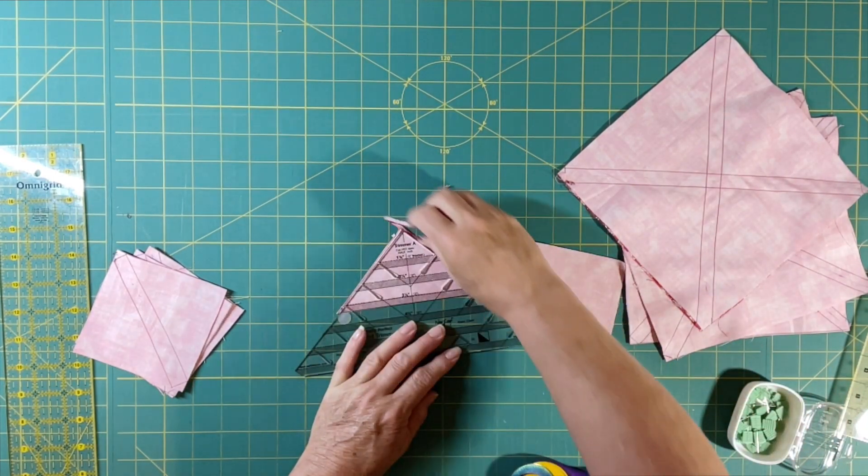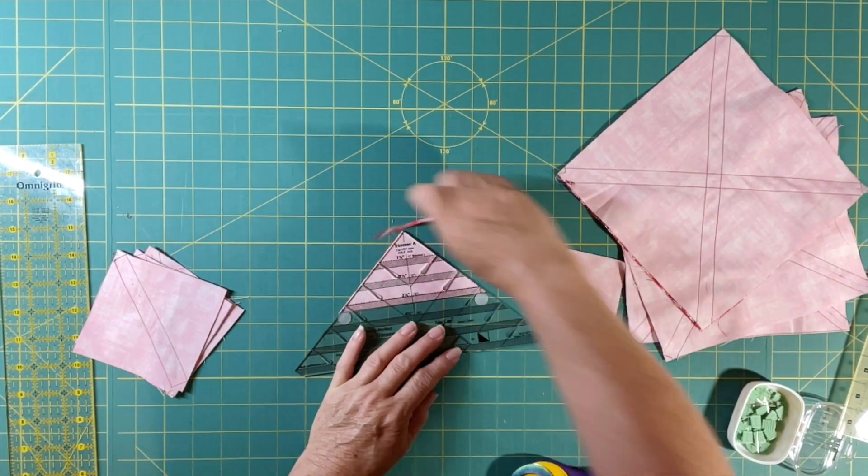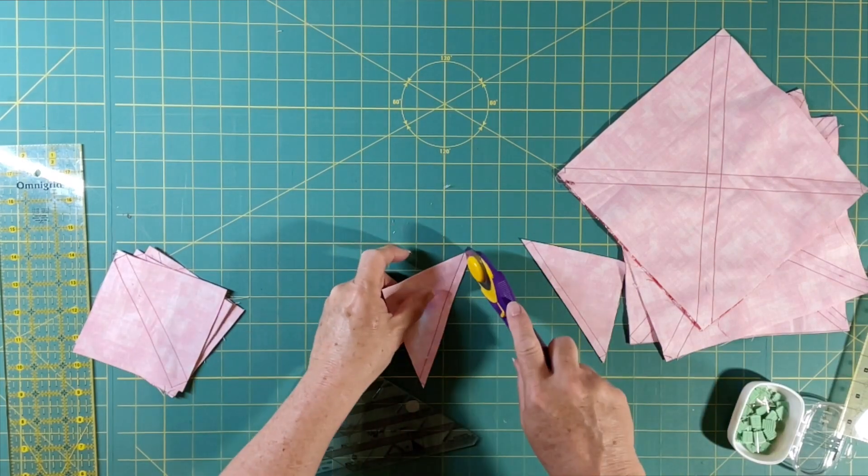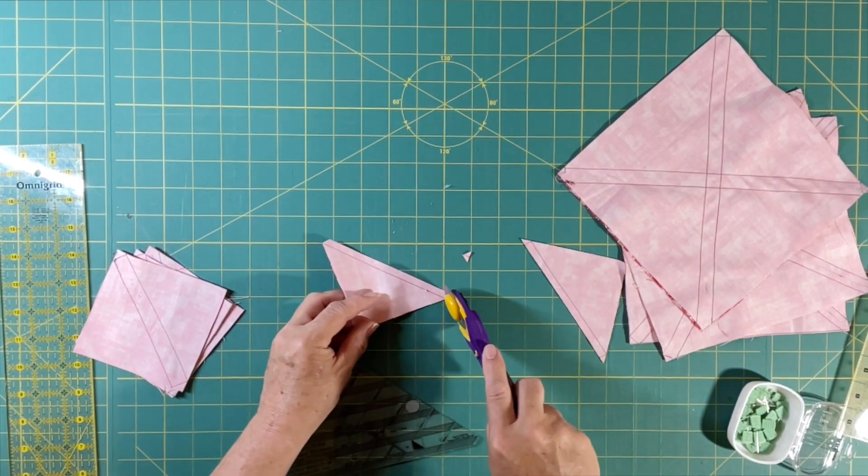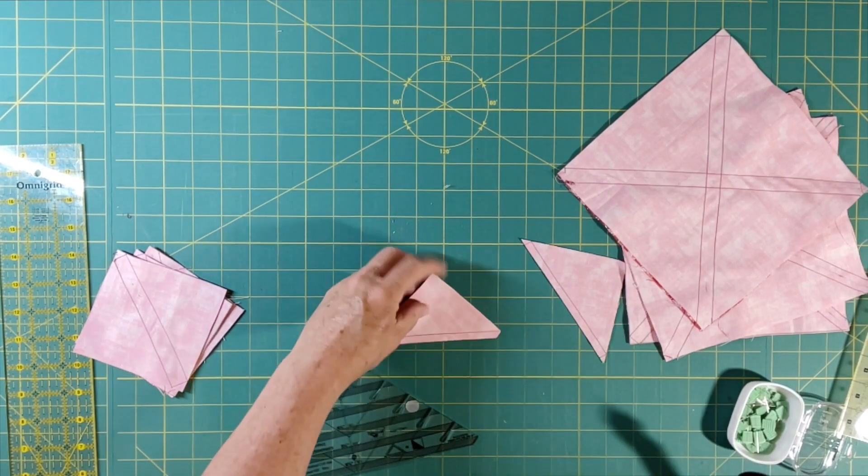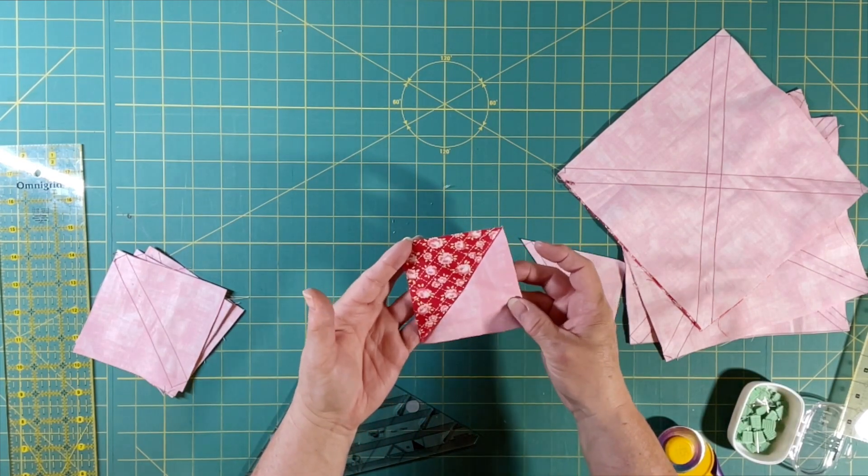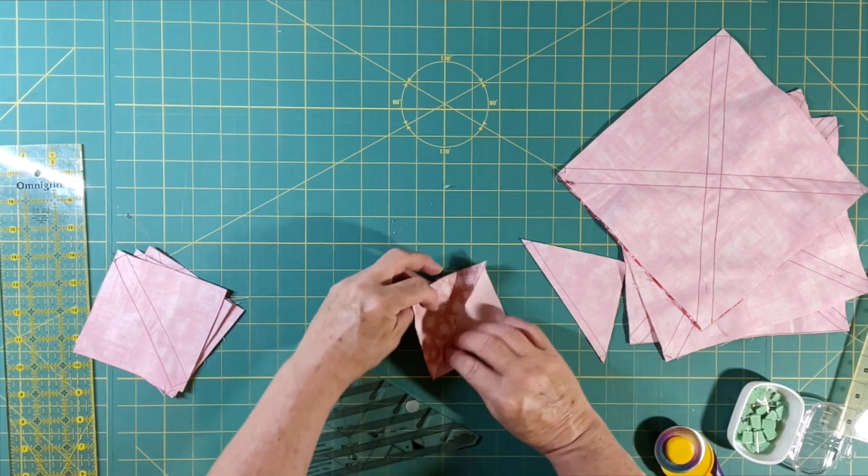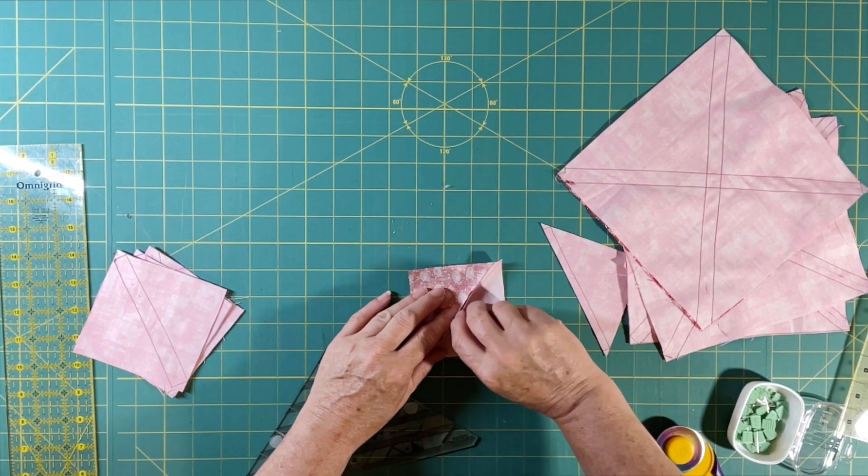For you to go there if you want to learn how to use your clearly perfect slotted trimmer for half square triangles before we continue. Okay, so there that one is ready.